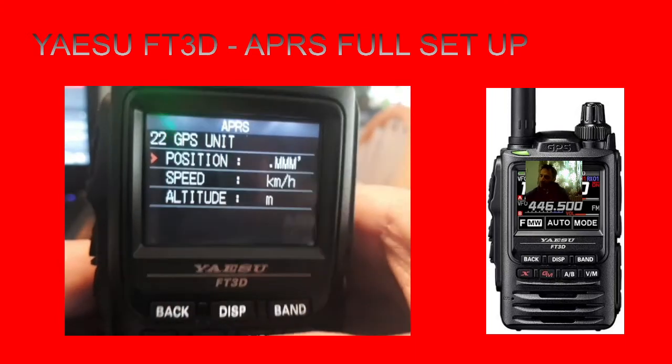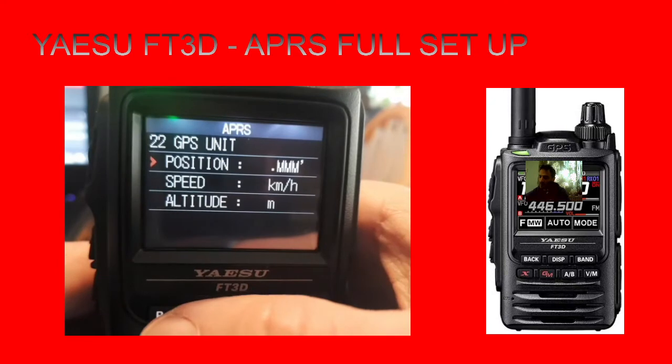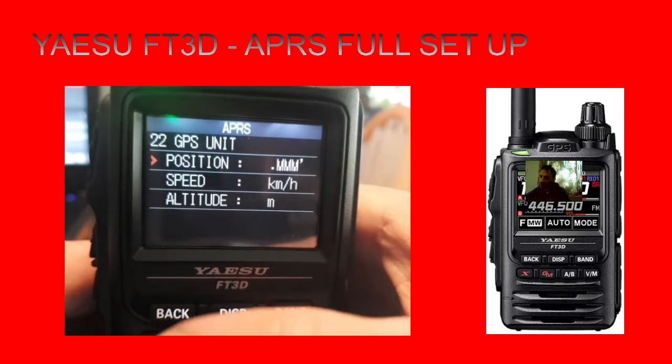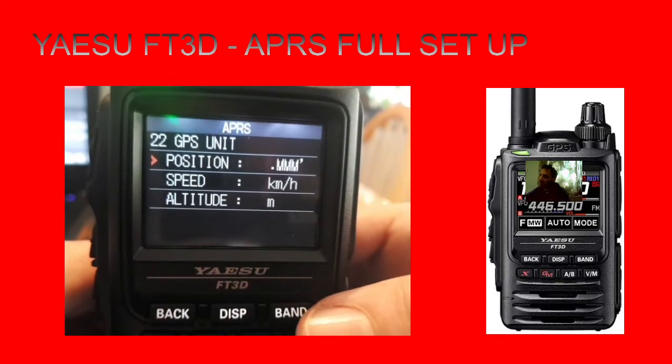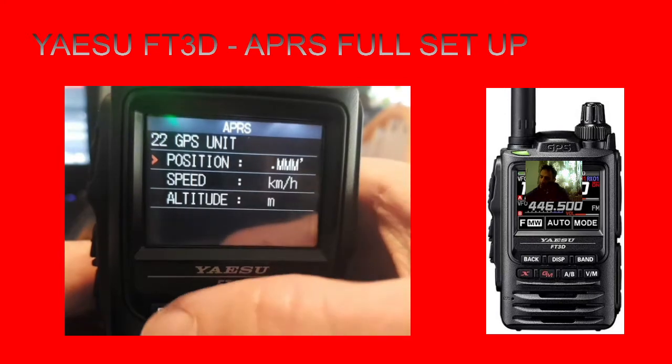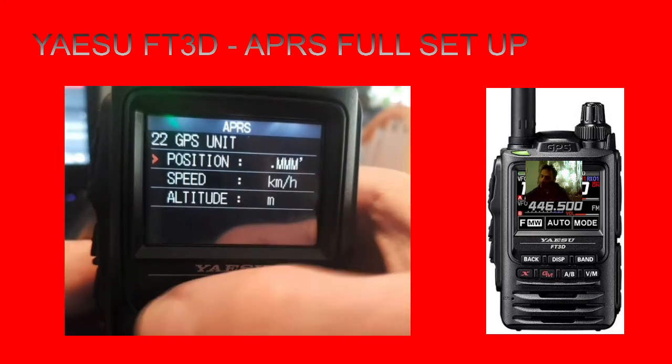GPS Units - that's your position format, whether you're going to use kilometers, miles, miles per hour, meters, etc. You can change those units around. So really menu 11 and menu 22 - you set those for whatever kind of units you're going to use.